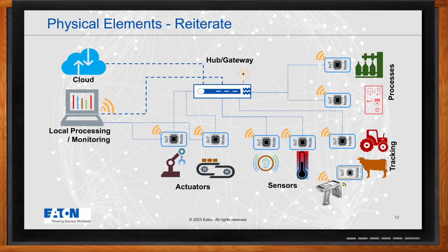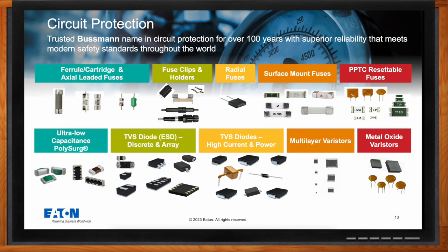Eaton Electronics provides a variety of circuit protection options including surface mount, through-hole, and cartridge fuses, available in single-use and multi-use variants. A range of overvoltage protection products is also available, including ultra-low capacitance PolySurge devices for protecting mega- and gigahertz communication lines. For power electronics operating in low-frequency ranges, Eaton provides TVS, MOVs, and MLVs in discrete and array formats to protect against overvoltage events.